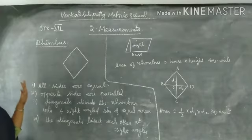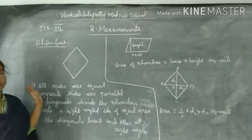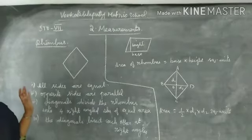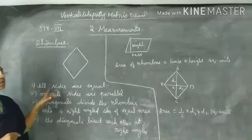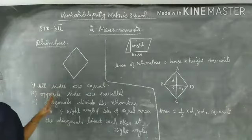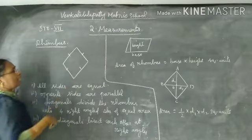We have four sides, four sides are equal. This is rhombus. All sides are equal. Opposite sides are parallel.